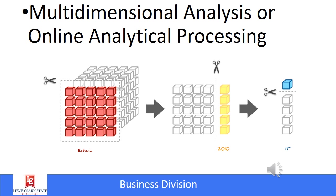OLAP — online analytical processing — is kind of slicing and dicing. You can see an example here: we start with a very large dimensional dataset, break it down into more manageable pieces, and finally deliver just exactly what the user is looking for — a tiny section of the data we started with.